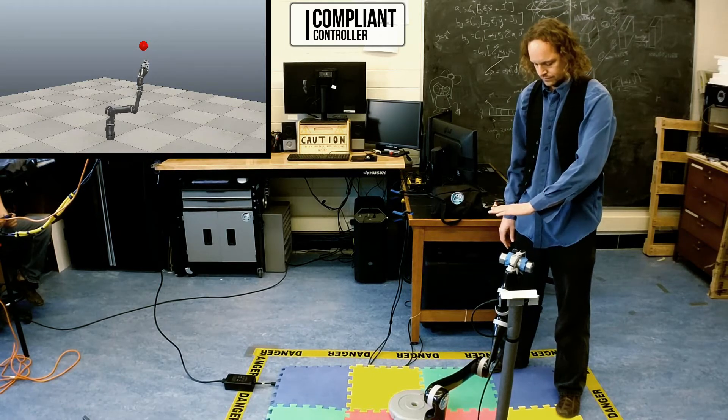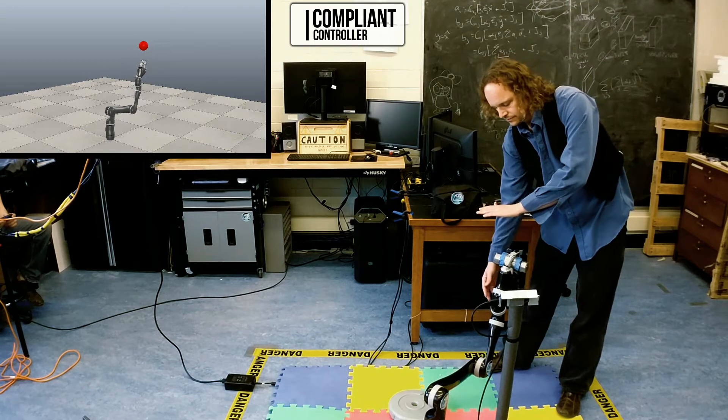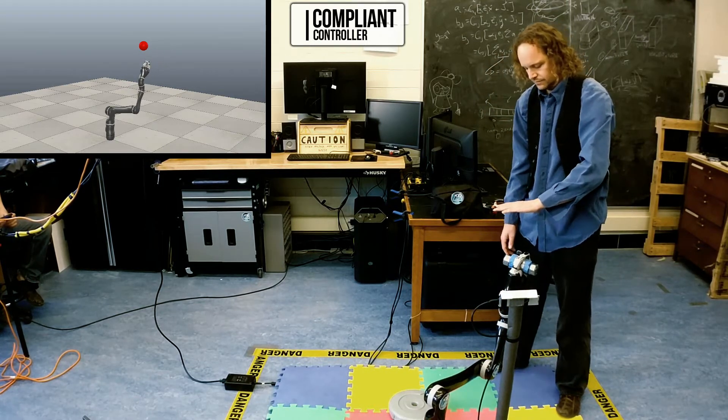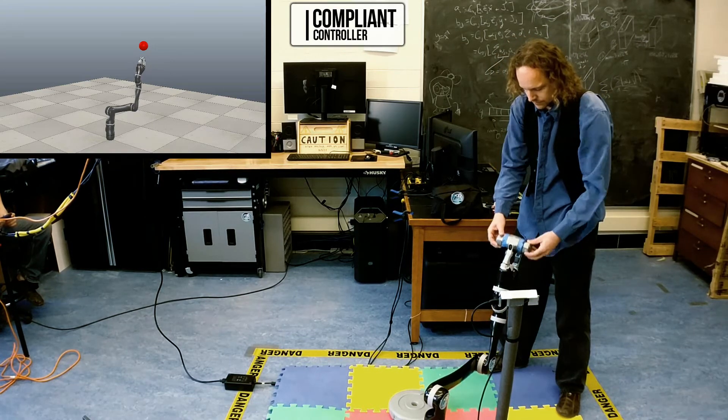In general, compliant controllers need to have a good model of the arm and all of the forces on it in order to control the arm well. If we remove the load, and the model that the controller has of the arm is once again accurate, then it can resume effective control of the arm.